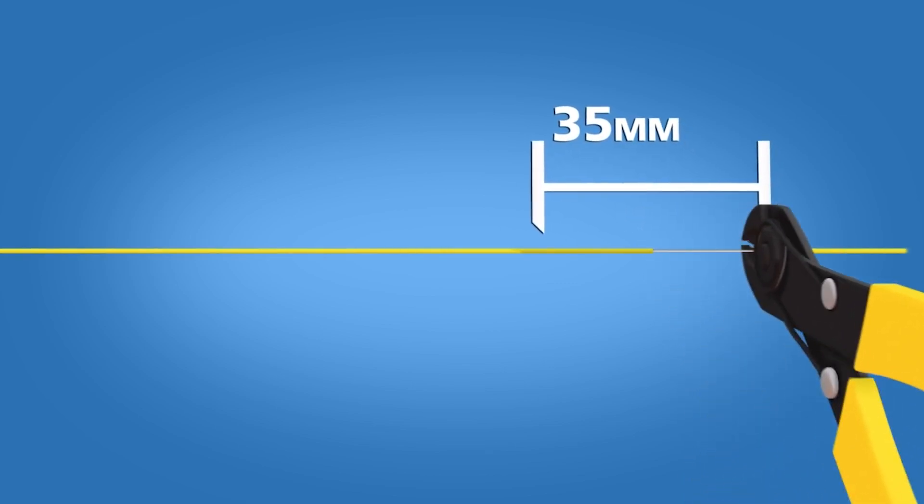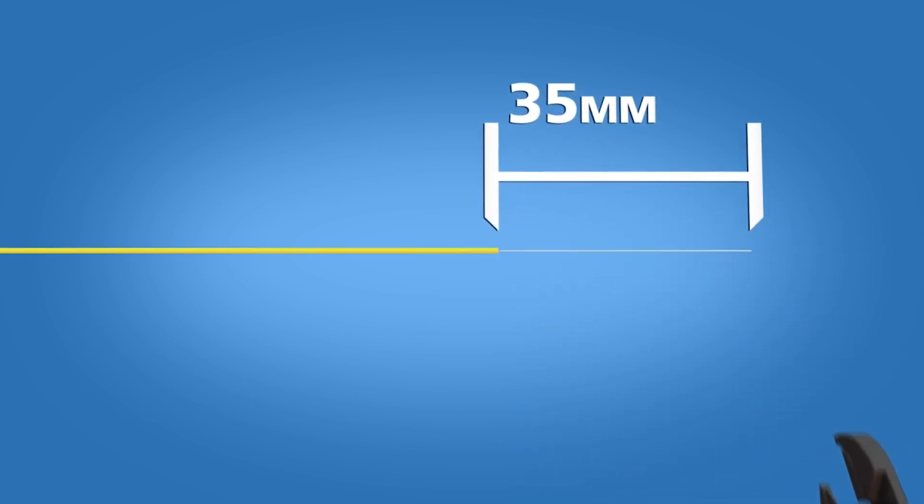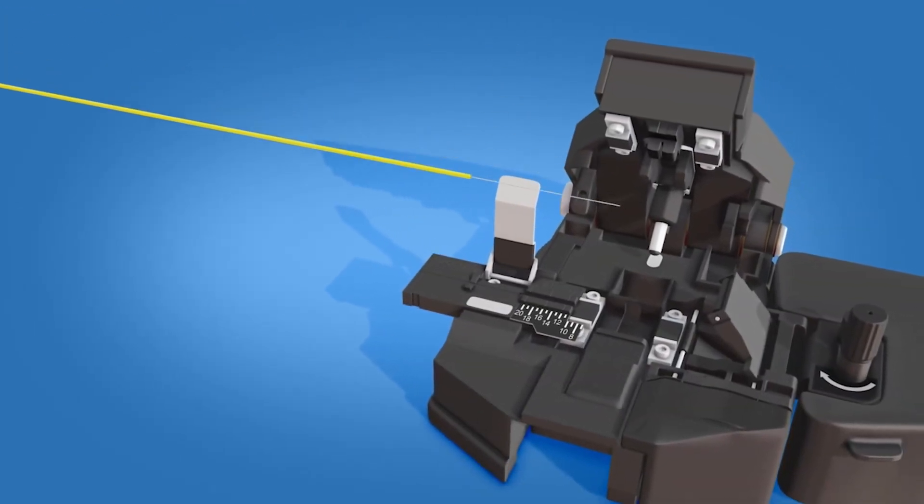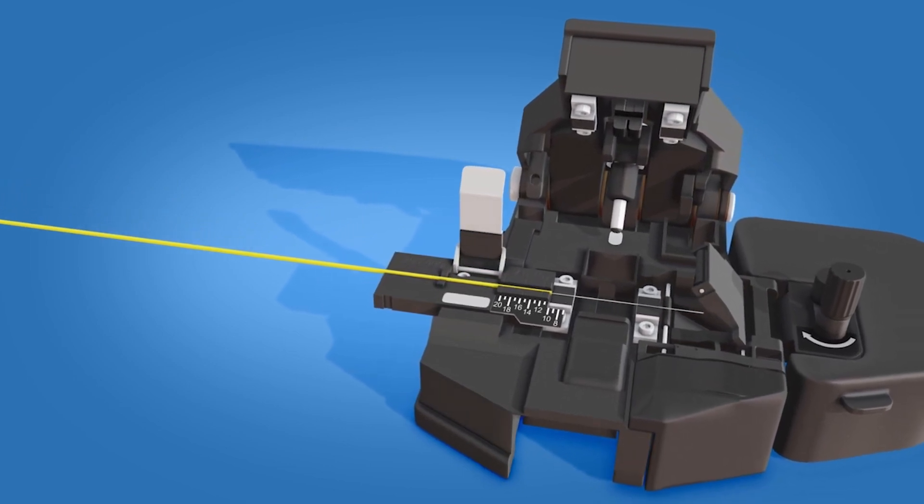Strip 35 millimeters of 900-micron and 250-micron coating off. Clean the fiber with a lint-free wipe and fiber preparation fluid. Place the fiber into the CT-30 cleaver at the 10.5-millimeter cleave length.